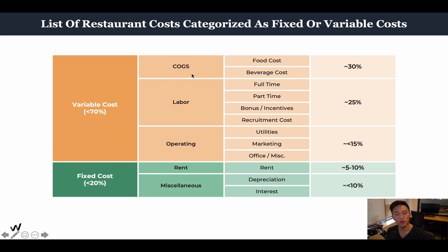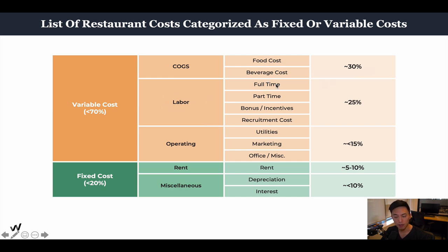Within cost of goods sold, there is food cost and beverage cost, and this should account for no more than 30%. If your food cost alone takes up 50% of your revenue, that's a big no — it shouldn't be more than 30% as a rule of thumb. With labor, you have full-time labor, part-time labor, incentives, bonuses, recruitment costs, and development costs — all added together should not account for more than 25% of your revenue.